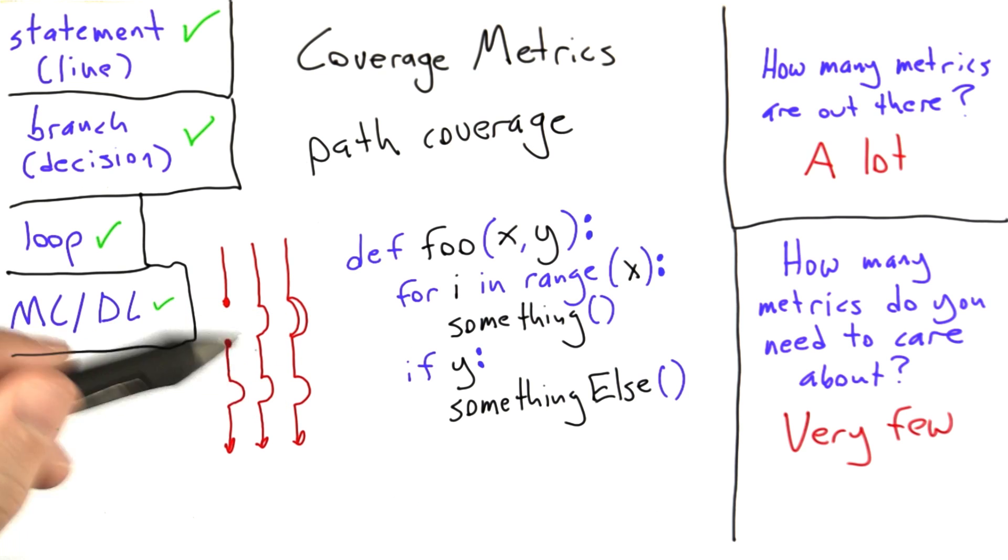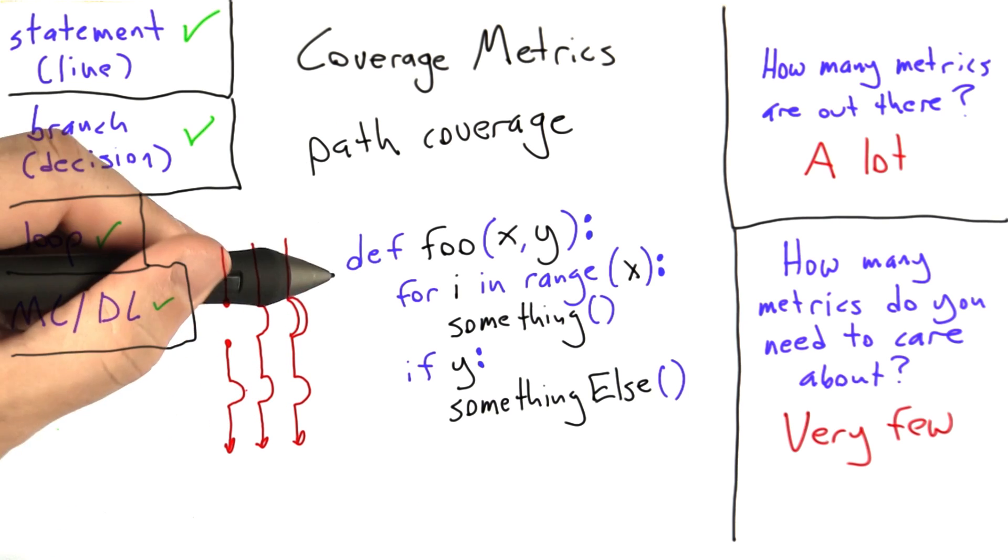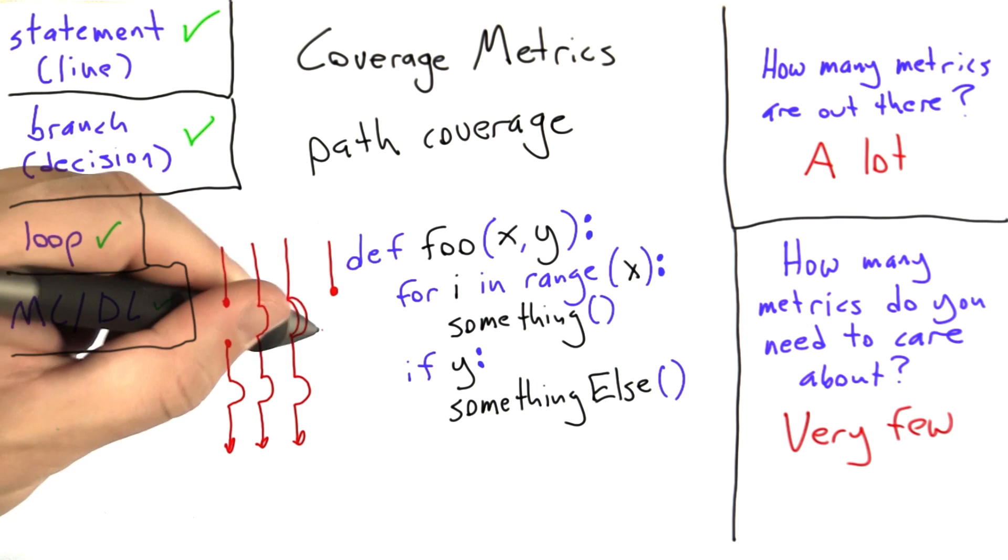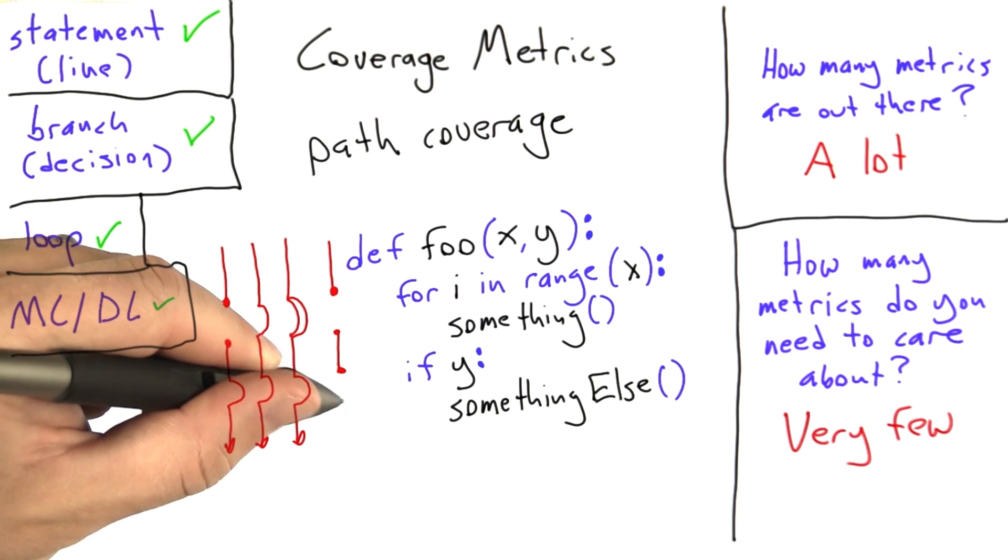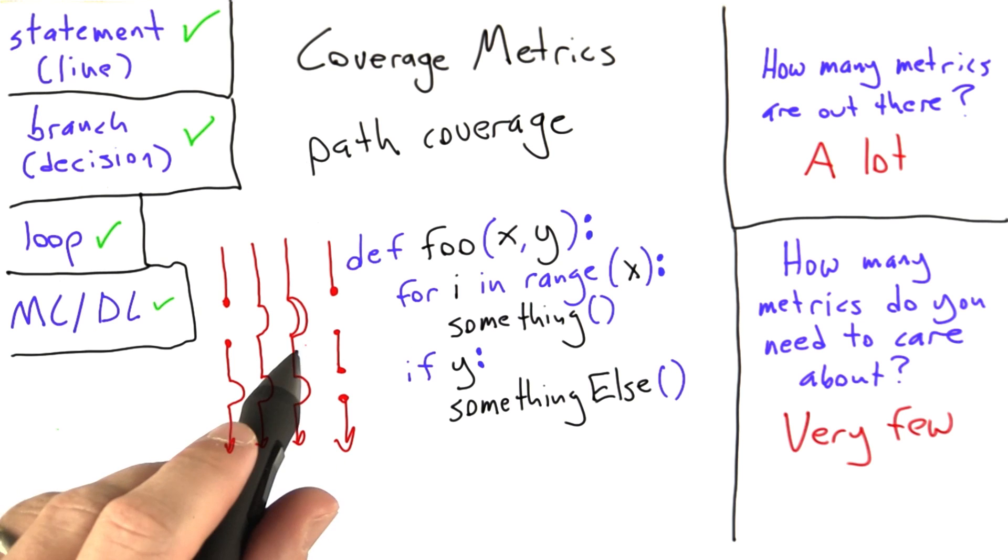Now there's going to be a similar family of paths where y is false. So we're going to get a path where x is 0, so we skip doing something, and we also don't execute something else. So we essentially have 2 times infinity paths through this code.